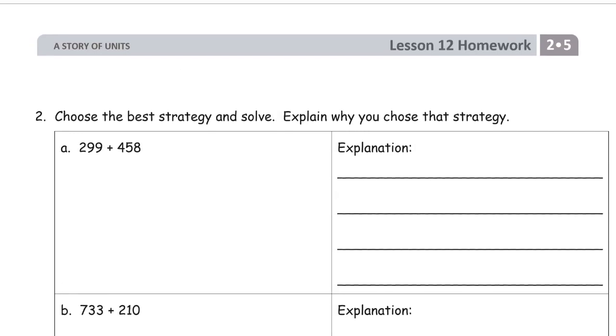Choose the best strategy and solve. Explain why you chose that strategy. 299, well that's almost 300, so it needs one more. 457. So it needs one more. It's 300 plus 457. And I chose this because 299...